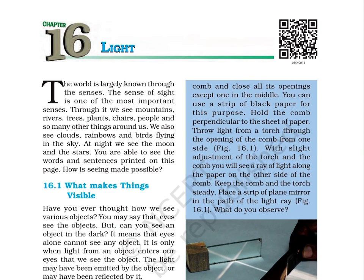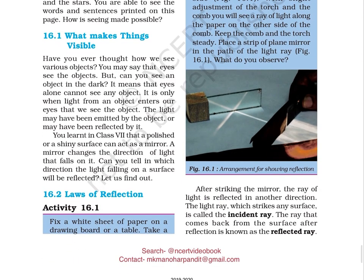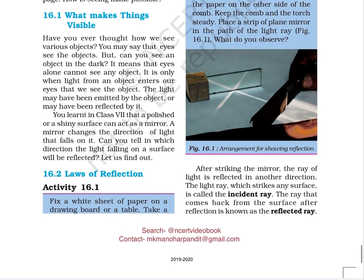Section 16.1: What makes things visible? Have you ever thought how we can see various objects? You may say that eyes see the objects. But can you see an object in the dark? It means that eyes alone cannot see any object. It is only when light from an object enters our eyes that we see the object. The light may have been emitted by the object or reflected by it. A polished or shiny surface can act as a mirror. A mirror changes the direction of light that falls on it.